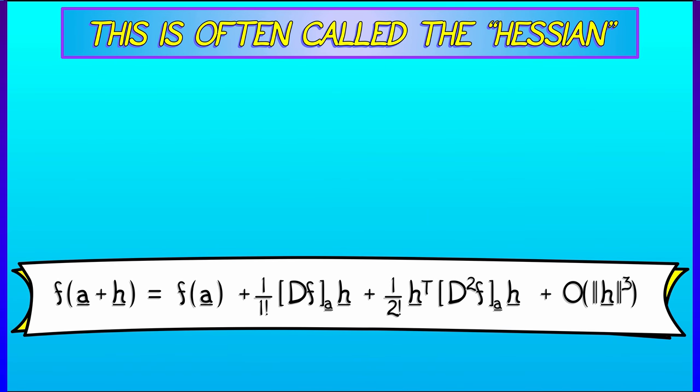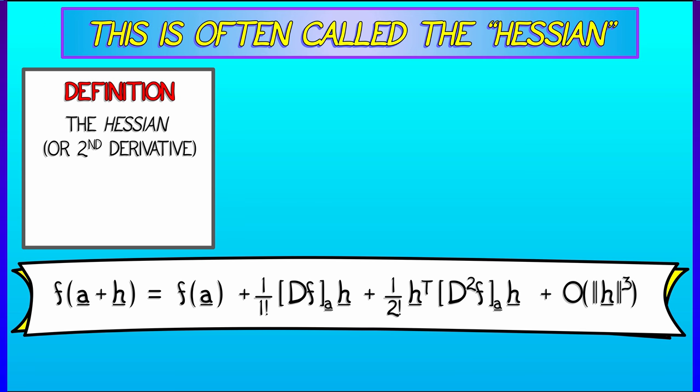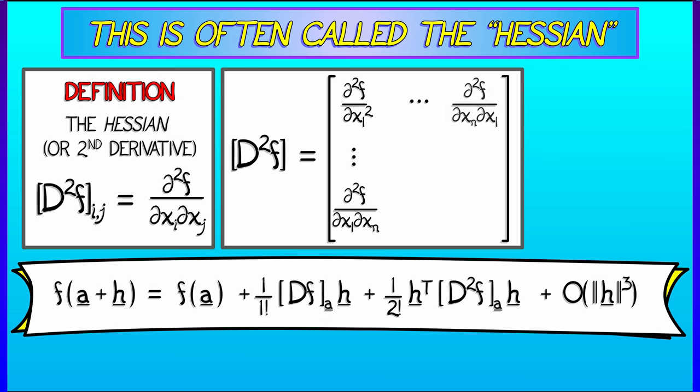And again, this all rests on the second derivative thought of as a matrix, often called the Hessian. And this is exactly what you think it is. It's the n-by-n matrix whose ijth entry is the second partial of f with respect to xi and xj in that order.